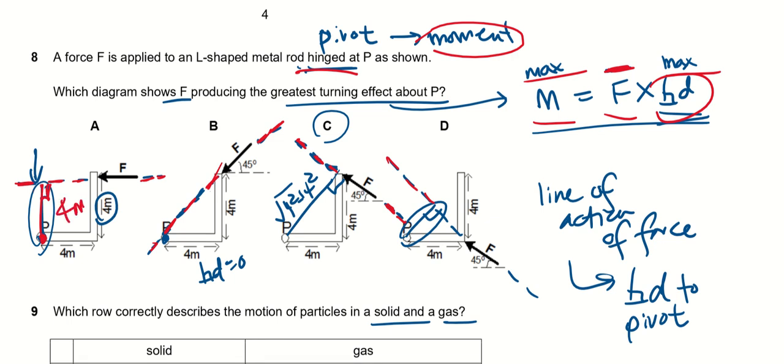For B, you will have noticed that the line of action of the force actually passes through the pivot, so the perpendicular distance is actually zero. For C, if you were to draw your line of action of the force correctly, then this will be the perpendicular distance, and this is actually the hypotenuse, which is four squared plus four squared square root, and therefore it's going to be actually bigger than four meters.